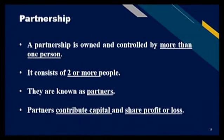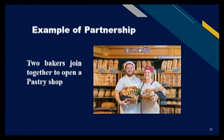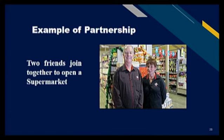Another form of business organisation is partnership. A partnership is owned and controlled by more than one person. A partnership consists of two or more people who are known as partners. Partners contribute capital and share profit or loss. Some examples of partnership are: two bakers join together to open a pastry shop, some doctors join together to open a clinic, and two friends join together to open a supermarket.